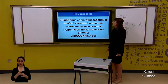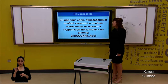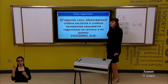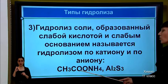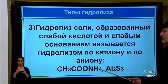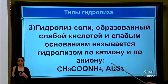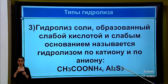Third rule. The hydrolysis of a salt formed by a weak acid and a weak base is called hydrolysis by both cation and anion — this is also called complete hydrolysis. An example is CH3COONH4 (ammonium acetate), where both the cation NH4 and the anion CH3COO are weak. A second example is aluminum sulfide, where aluminum is a weak cation and S is a weak anion.